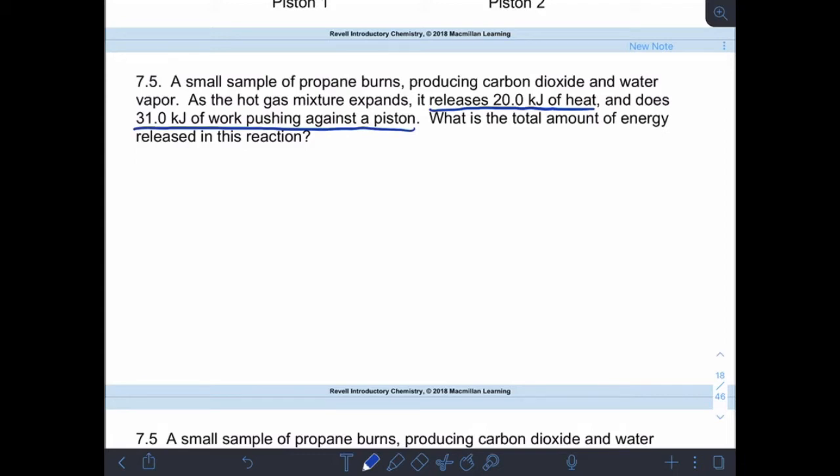All right, so we have our energy equation. So delta E equals Q plus W. Okay, so Q is heat, and it says that the system releases 20 kilojoules. Okay, so that means negative 20 kilojoules. Okay, that releases part tells us that energy is coming out. So the sign on the heat has to be negative.